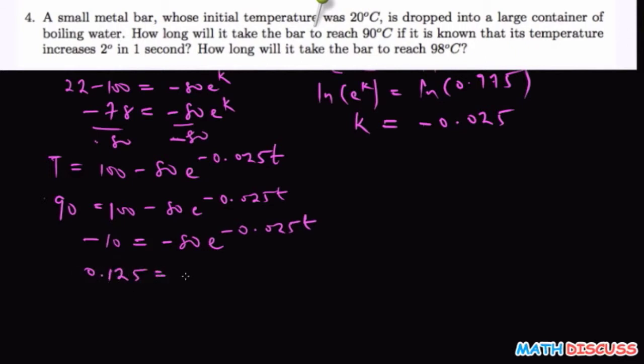equals e to the power negative 0.025t. This is what you get, and then you take the natural logarithms of both sides. So taking the natural logarithms you have ln of 0.125